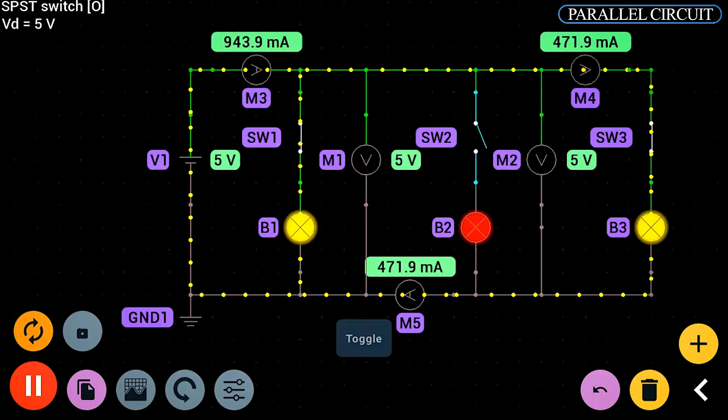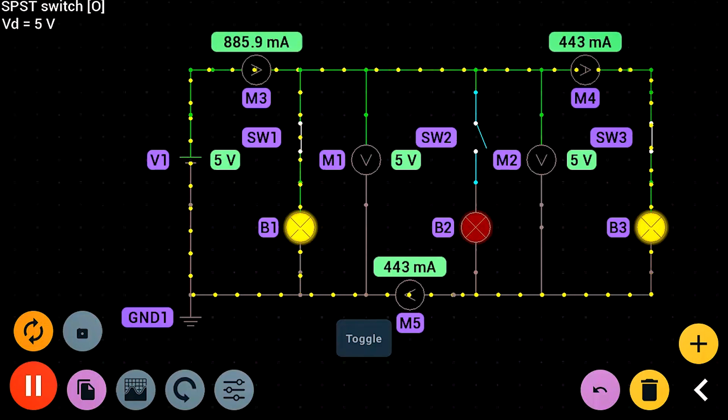Each branch gets full voltage, but the current divides among them. That's why homes are wired in parallel, not series.